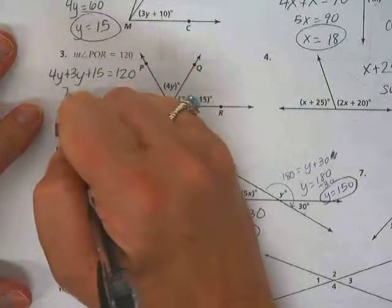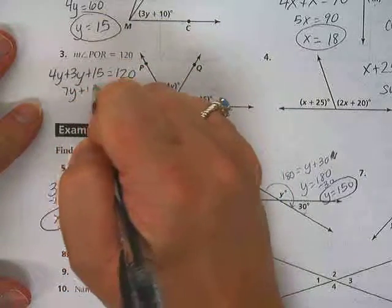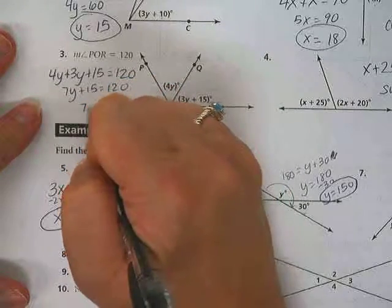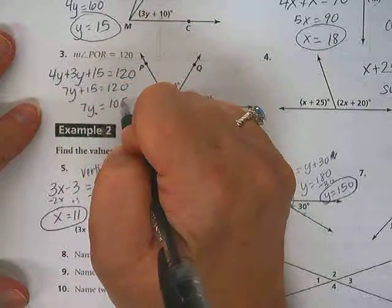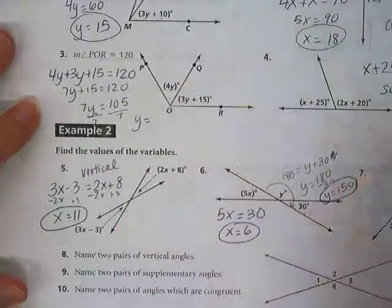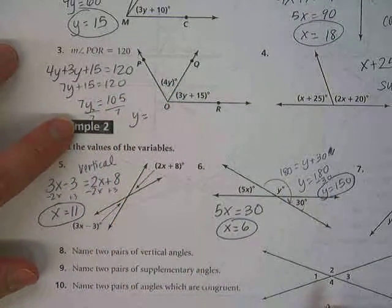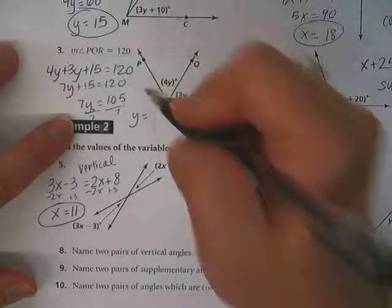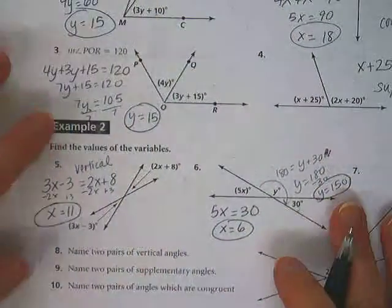So 4y and 3y is 7y plus 15, and then we subtract the 15, so we have 7y equals 105. Divide both sides by 7. I can't remember what that equals. Did you guys get number 3? I think it's also 15, isn't it? Okay, good.